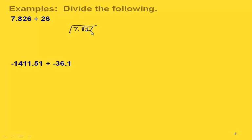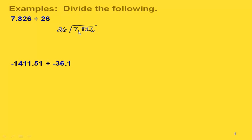In this next example, notice that our divisor is already a whole number so we don't have to move the decimal point at all. We can just start dividing and ignore the decimal point until we get to the end of our problem, then put it in the correct place.